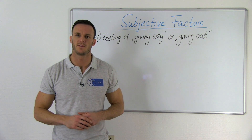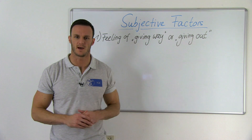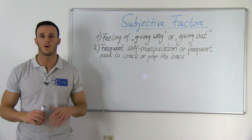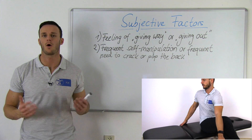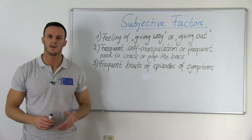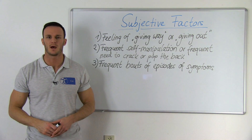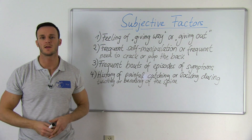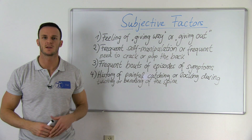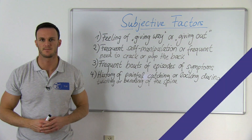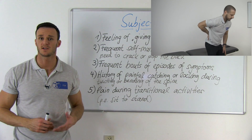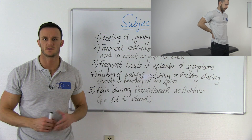Number one: the feeling of giving way or giving out. Number two: frequent self-manipulation, or the frequent need to crack or pop one's back. Number three: frequent bouts or episodes of symptoms. Number four: a history of painful catching or locking during twisting or bending movements of the spine. And number five: pain during transitional activities, for example sit to stand.